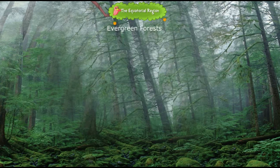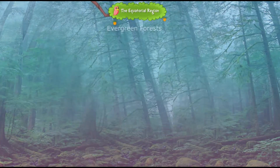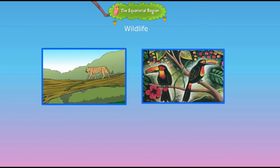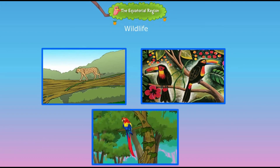The trees form a green canopy that does not allow sunlight to pass through. Animal life is also varied in the tropical rainforests. Jaguars and birds with bright feathers, such as macaws and toucans, are found in these forests.